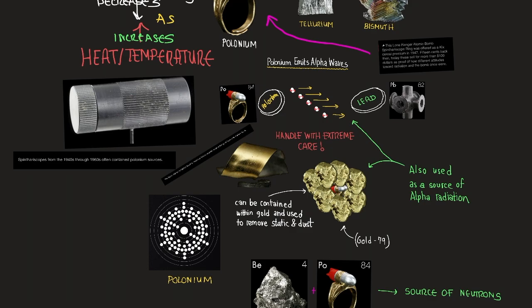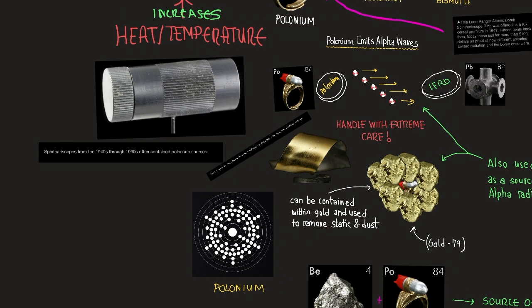Polonium is used industrially to eliminate static electricity generated by such processes as paper rolling, the manufacture of sheet plastics, and the spinning of synthetic fibers. It is also used on brushes for removing dust from photographic film and in nuclear physics as a source of alpha radiation. Mixtures of polonium with beryllium or other light elements are used as sources of neutrons.